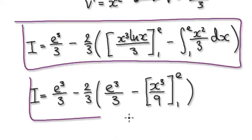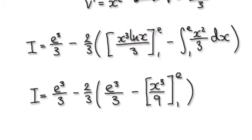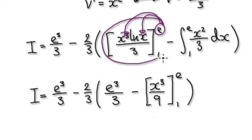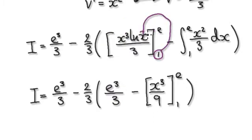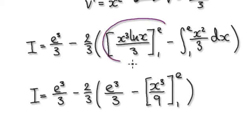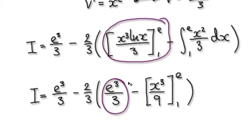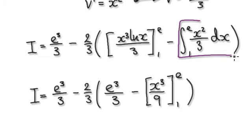Following through the procedure takes us to the evaluated expression. When you put x = 1 in, ln(1) is 0 so that whole term disappears. The remaining piece is this expression, and integrating that straightforward term gives us our next result.